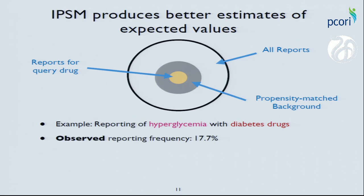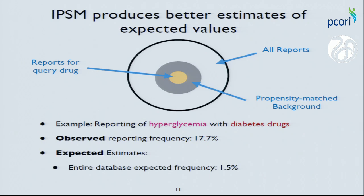For the hyperglycemia and diabetes drugs example: 17.7% of reports for diabetes drugs list hyperglycemia as an adverse event, while only approximately 1.5% of all drug reports list hyperglycemia — giving a ratio much greater than 2, the standard significance cutoff, producing false associations. But using this approach and restricting the cohort, we estimate the expected frequency of hyperglycemia for related but non-diabetes drugs is 17.6%. That 17.7 versus 17.6 is essentially 1, and is no longer significant.